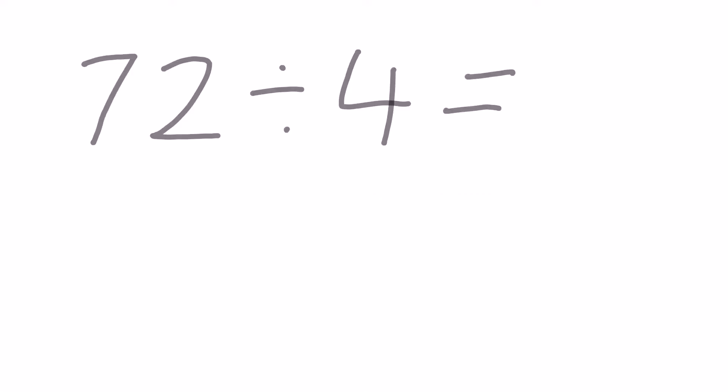If we take a problem like 72 divided by 4, we can see that it requires us to use multiple strategies to solve it. First of all, if you take a look at the division sign, normally that tells us that we need to reverse this problem, especially when the numbers are quite large.